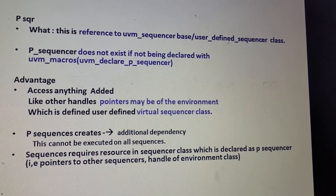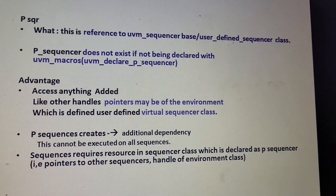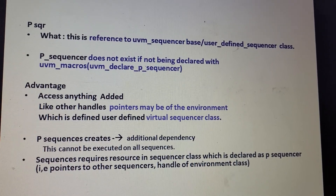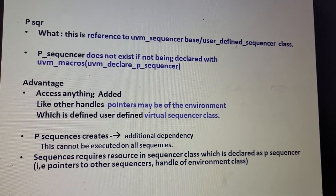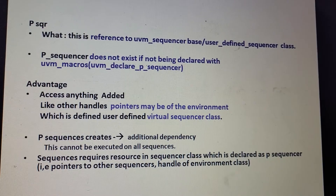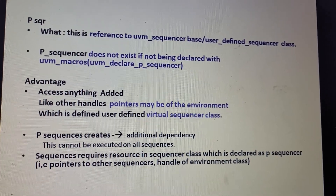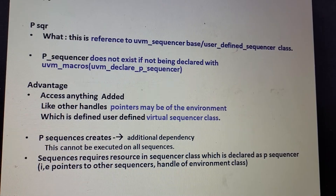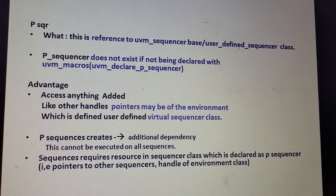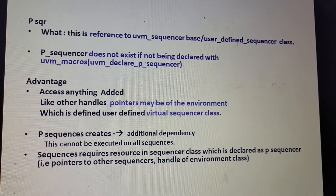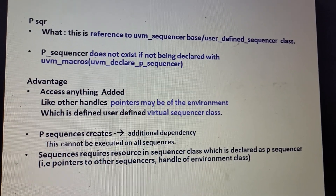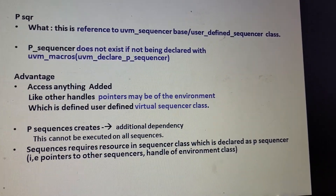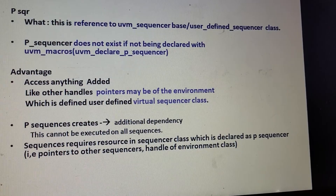You could name p_sequencer differently, though p_sequencer is the convention. p_sequencer does not exist without UVM macros. Using p_sequencer allows access to environment pointers that are part of the sequencer. However, it creates an additional dependency — the sequence cannot be executed on all sequencers because it requires specific resources in the sequencer class declared as p_sequencer.